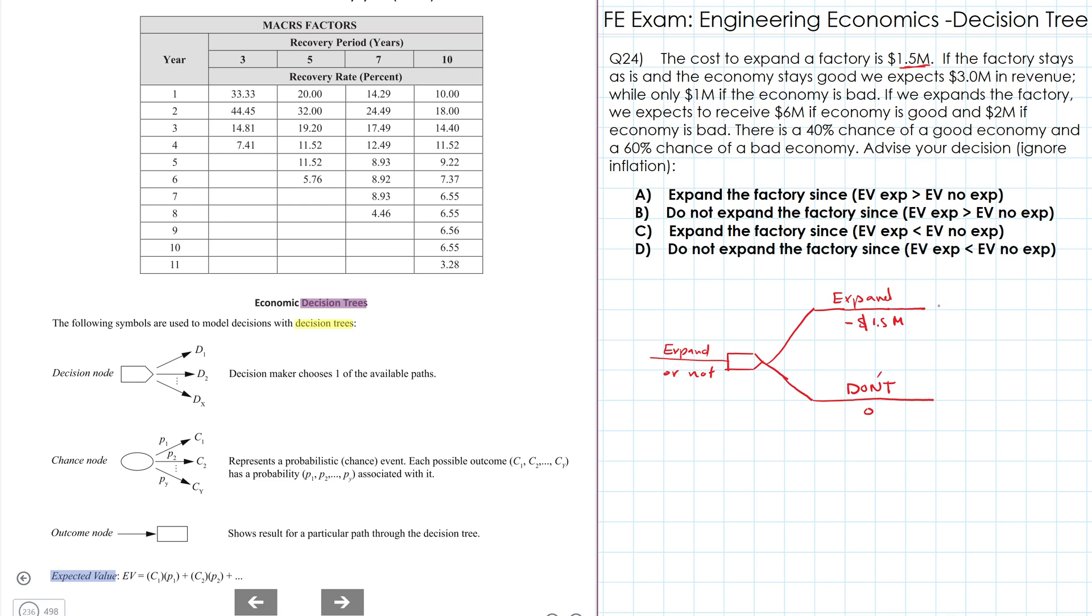Now let's go to the chances we have. So if there is, if we expand it and the economy is good, we will receive $6 million. So $6 million if the economy is good and $2 million if the economy is bad. So for bad economy, $2 million.